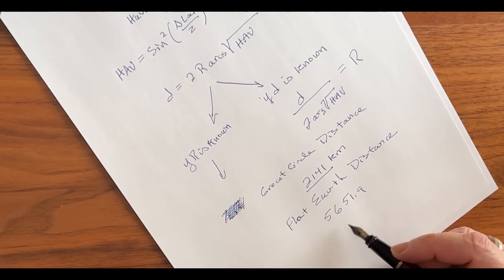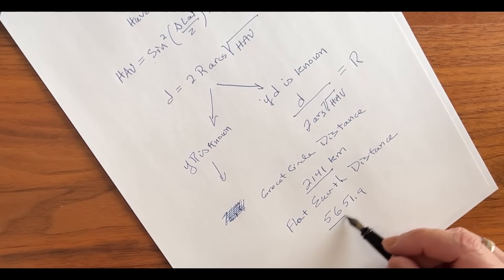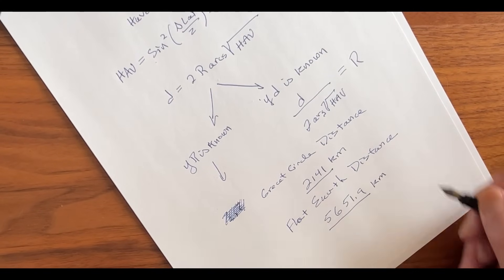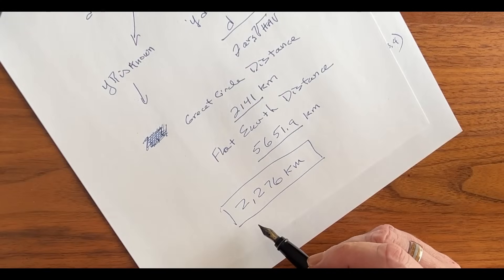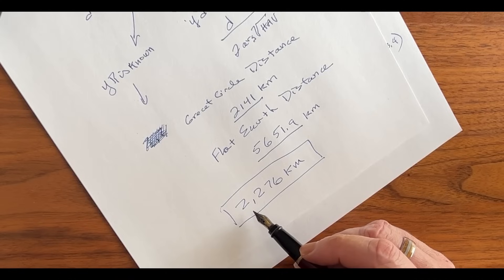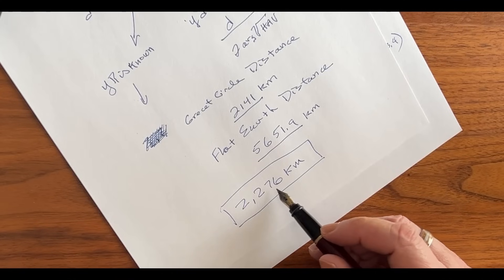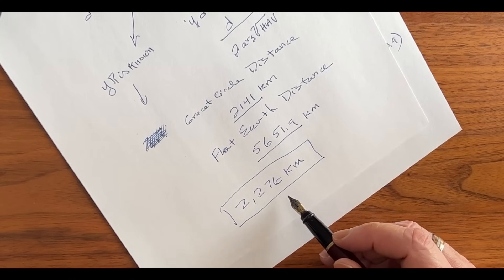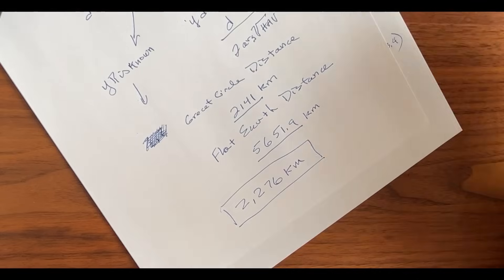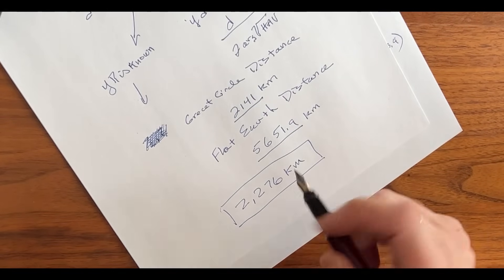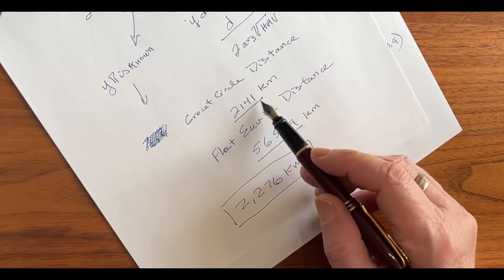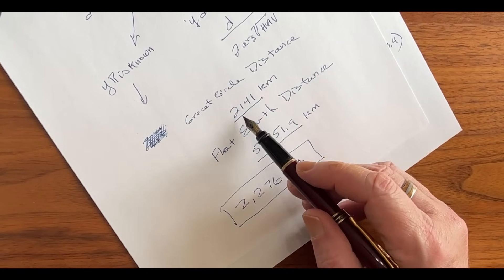We've already calculated the flat earth distance as 5,651.9 kilometers. What's the actual length of the cable? Based on published records, the cable length between those two locations is 2,276 kilometers. What's this tell us? Well first of all, the minimum distance it could be on a spherical earth is 2,141.